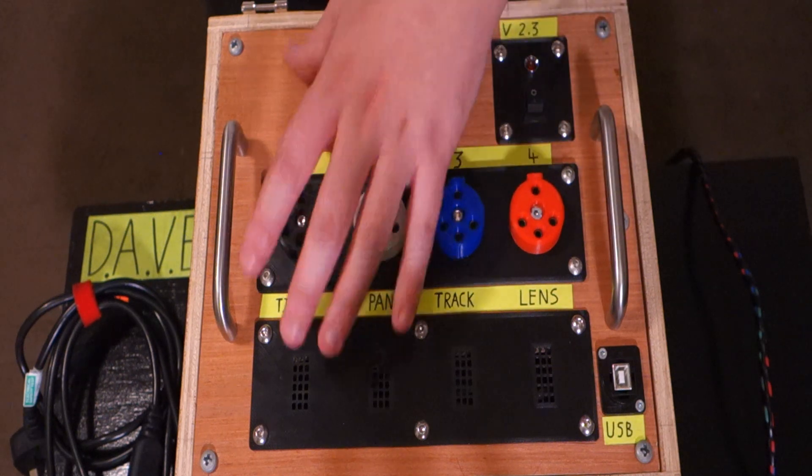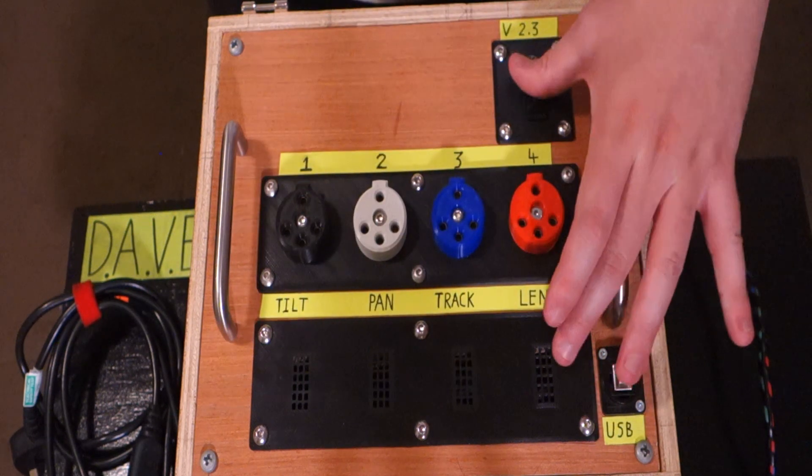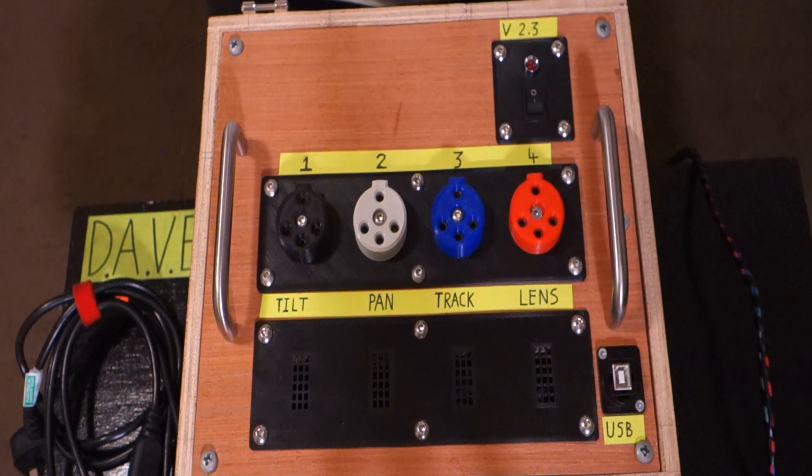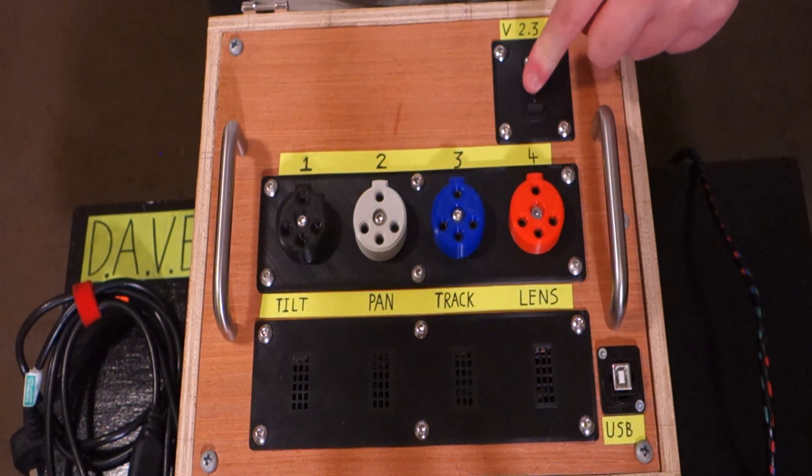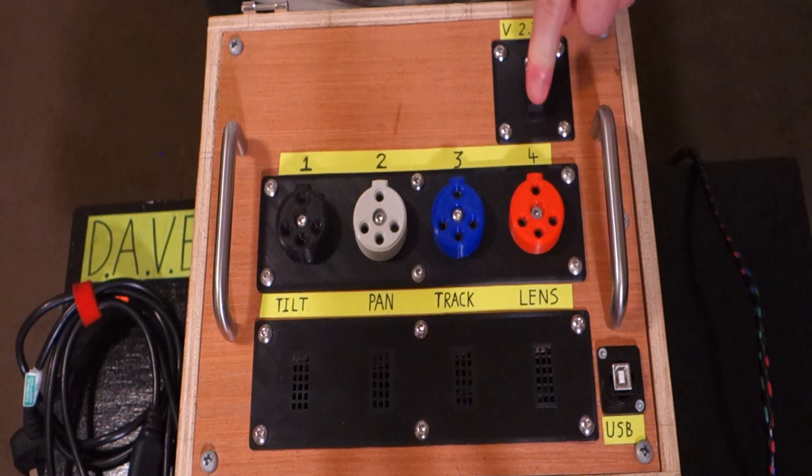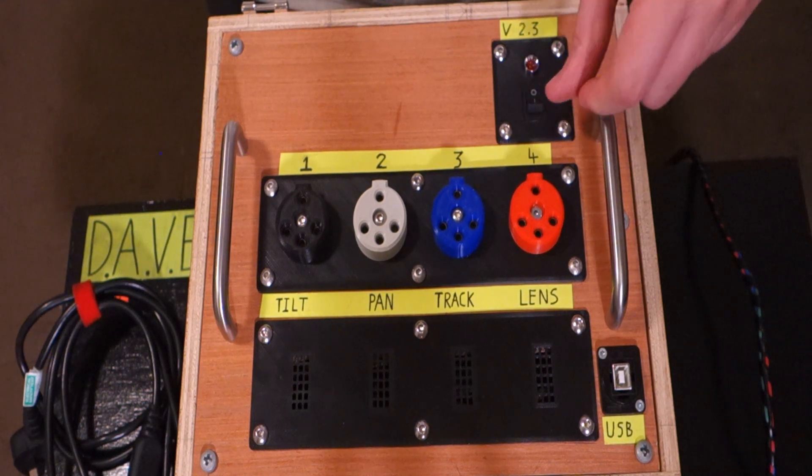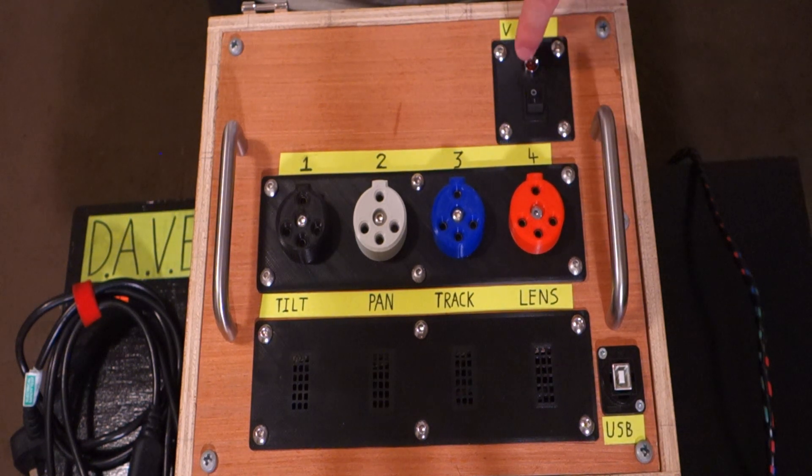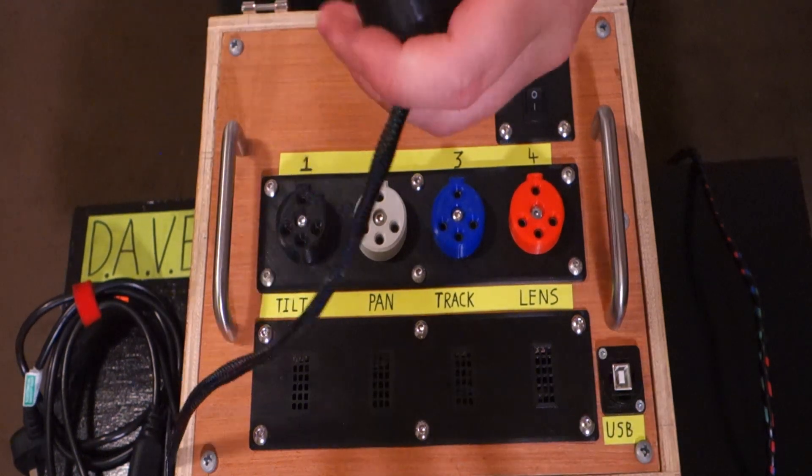All of this is 3D printed very nicely by my brother, really appreciate that. This is an old switch at the top for a previous version. As you can see it's version 2.3, it will probably change at some point. The switch does nothing, it's a bit of a nice aesthetic choice.